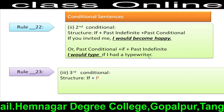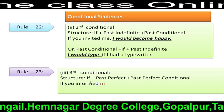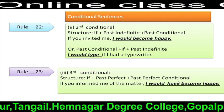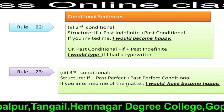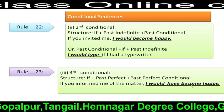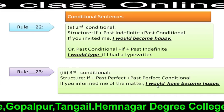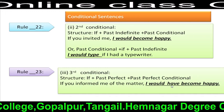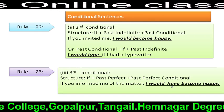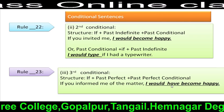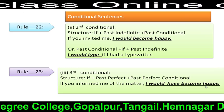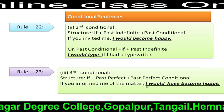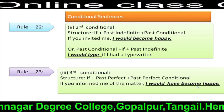Rule 23: Third conditional structure: If + past perfect tense + past perfect conditional. In this structure, past perfect conditional refers to: subject + would have/could have/might have + V3 + extension. For example: 'If you had informed me of the matter, I would have become happy.'